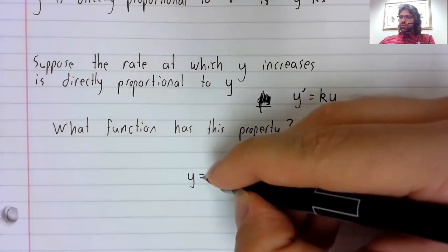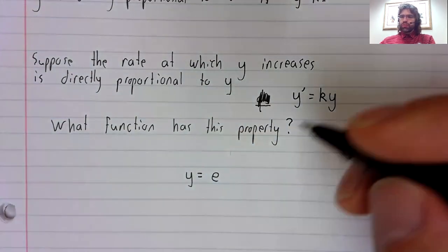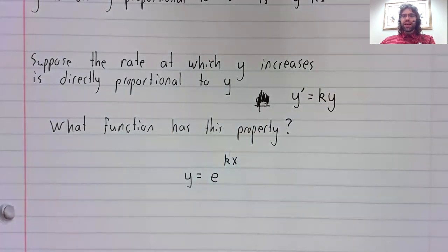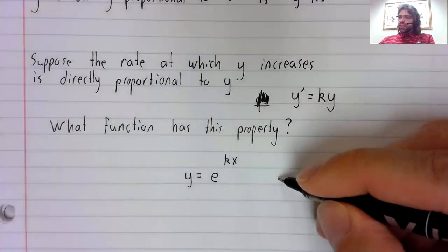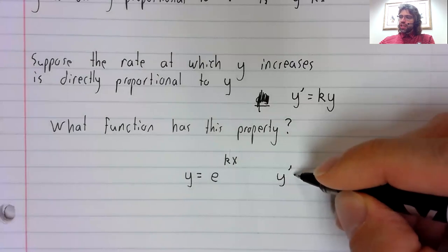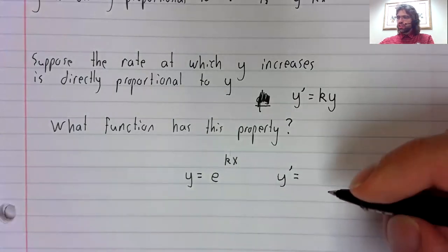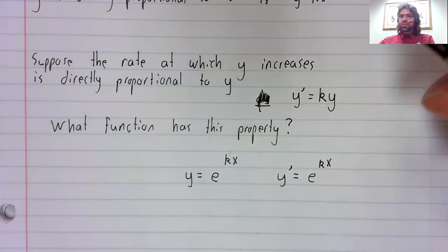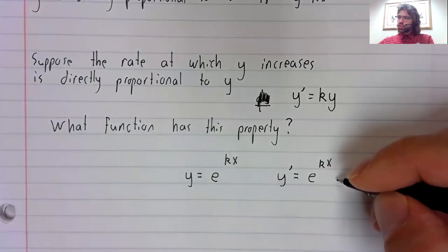The answer to that question is exponential functions with kx in the exponent. If y equals e to the kx, then using kx as an inside function, y prime equals e to the kx times the derivative of this inside function.